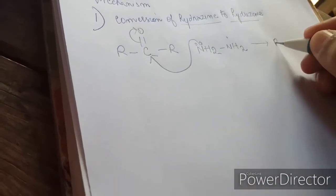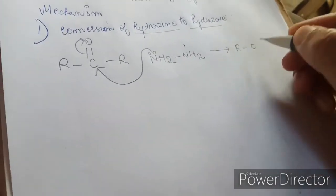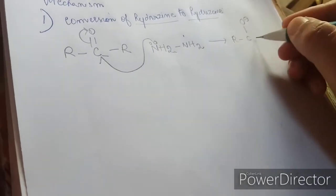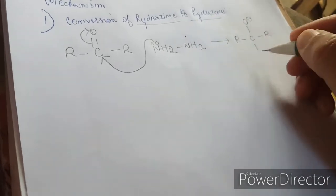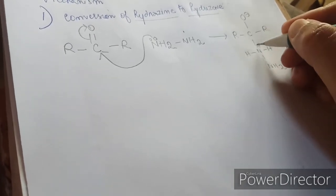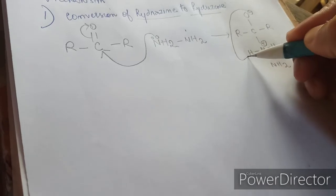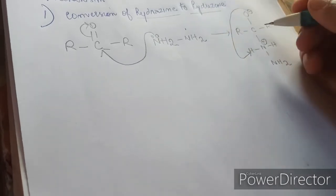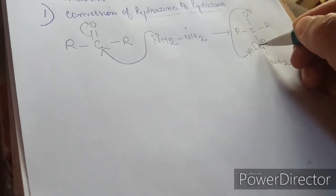So we will form an intermediate: R-C(O⁻)-R with N⁺H₂-NH₂ attached. After this, the negatively charged oxygen will attack the hydrogen in a cyclic manner.